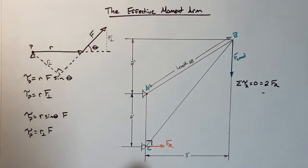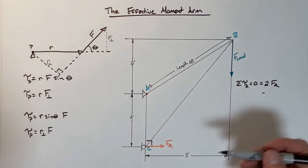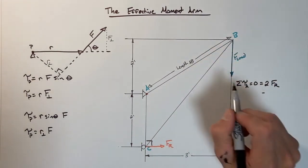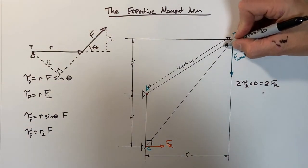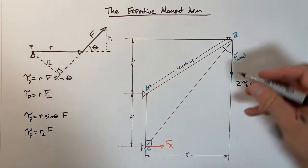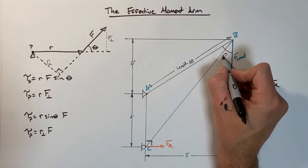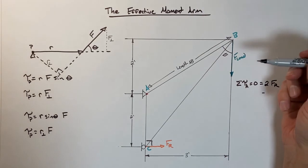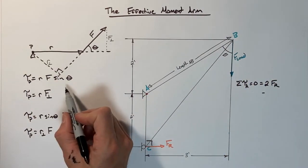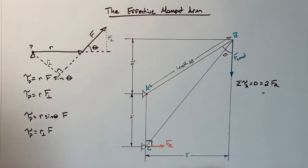Now what people want to do typically is go through and work out the length of segment or member AB. That would involve some trig to go through and figure out how long this member is. It has a vertical component of 2 and a horizontal component of 3, so you can use the Pythagorean theorem to work that out. There's nothing wrong with that. You can also go through and solve for this angle right here, θ, which is the angle between the load and the radius vector.